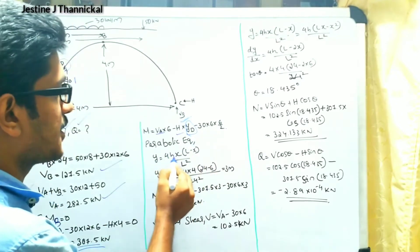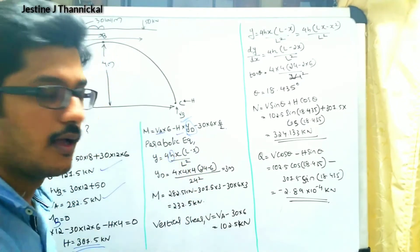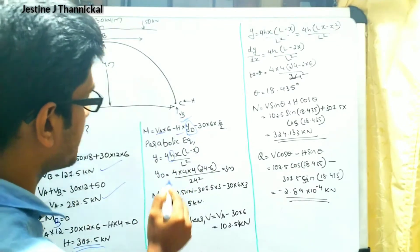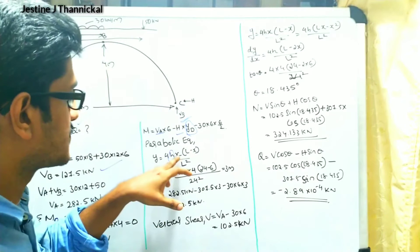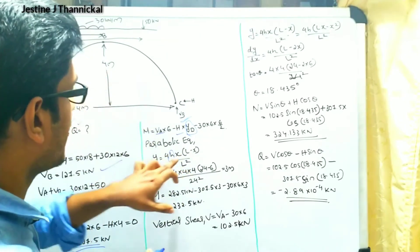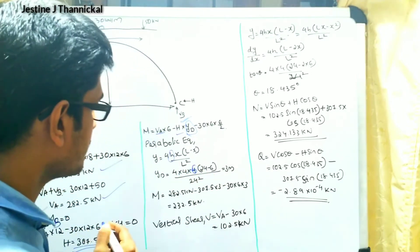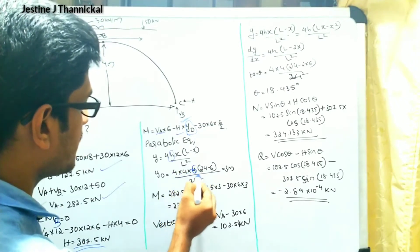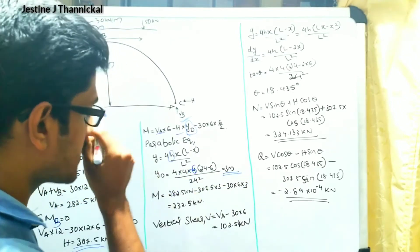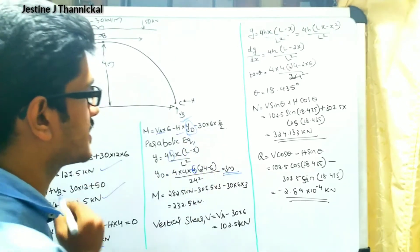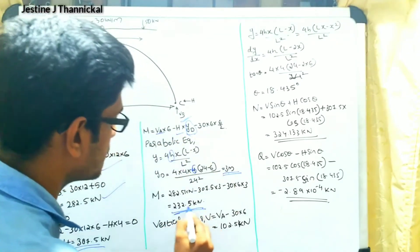Using the parabolic equation y equals 4hx(L minus x) divided by L squared, where h is the crown rise of 4 meters, x equals 6 meters (horizontal distance of point D), and L equals 24 meters (total span). Substituting these values, we get yd equals 3 meters. Substituting yd equals 3 back into the bending moment equation, we finally get the bending moment at point D equals 232.5 kilo Newton meters.